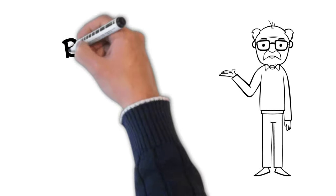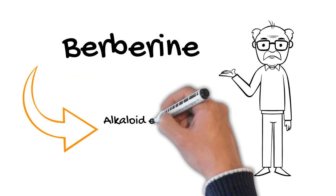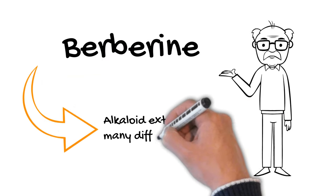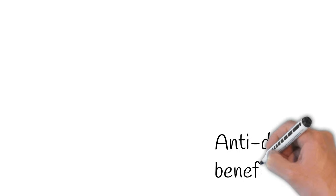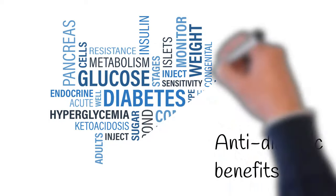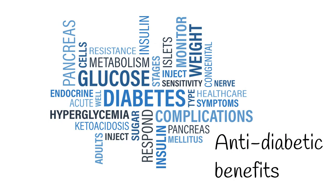Today we're gonna talk about berberine. This is a natural compound, an alkaloid, that is extracted from many different herbs. Many people take it due to its anti-diabetic benefits, but does this natural compound bring any other benefits?